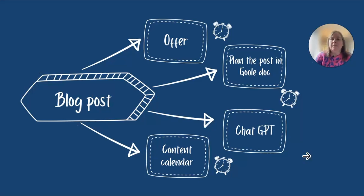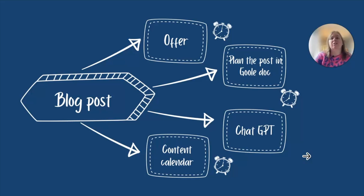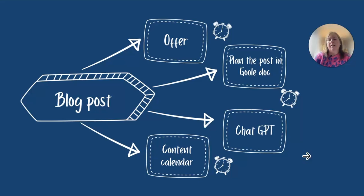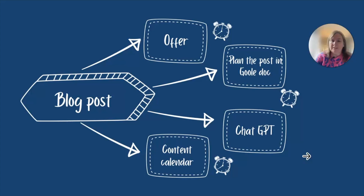Each time you switch between software, it can take a lot of time to get refocused. According to research, the minimum time that can take is nine minutes. So each time you jump between looking at your offer, going into Google Docs to start writing, leaving Google Docs and going into ChatGPT — each time you move from one software to another, that can take nine minutes for you to refocus.